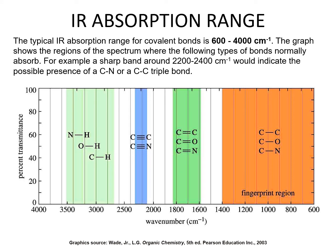The typical IR absorption range for covalent bonds is 600 to 4000 centimeters to the minus one. For example, a sharp band around 2200 to 2400 centimeters to the minus one indicates the possible presence of a carbon-nitrogen or carbon-carbon triple bond. The region from 3500 to around 2700 indicates N-H, O-H, and C-H bonding. A small region between 2000 and 2500 represents carbon-carbon and carbon-nitrogen triple bonds. A region between 1600 and 1800 represents C=C, C=O, and C=N double bonds. Then we have the fingerprint region.